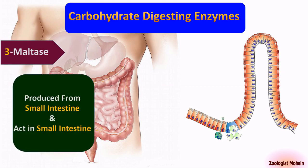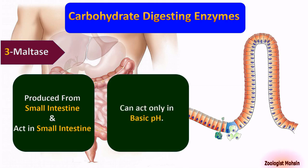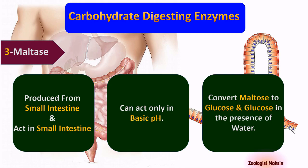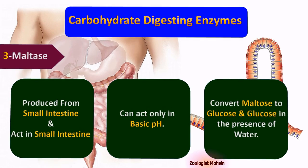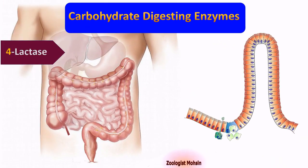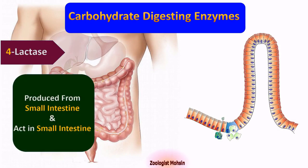Number three: maltase. Maltase is produced from the small intestinal walls and acts in the small intestine. Maltase can act only in basic pH, that is more than 7. It converts maltose to two molecules of glucose from a single molecule of maltose, in the presence of water.